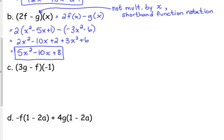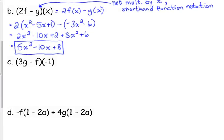First of all, you may want to rewrite that as, let's rewrite it as 3g of negative 1 minus f of negative 1. If the other notation bothers you, you may want to rewrite it this way. Now, there are two ways to do this.